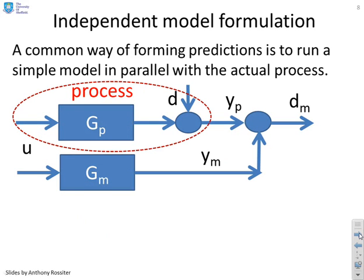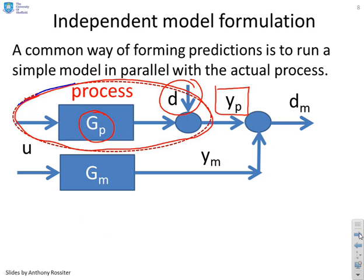Now in practice, we don't actually know G and we don't actually know D. But this is quite a useful model for how the world might operate. So what are we going to do with it? Here's an independent model formulation. In this red ellipse, I've marked down my model for the process. You see I've got a GP. Now those are parameters I don't actually know. And I've got my output disturbance.